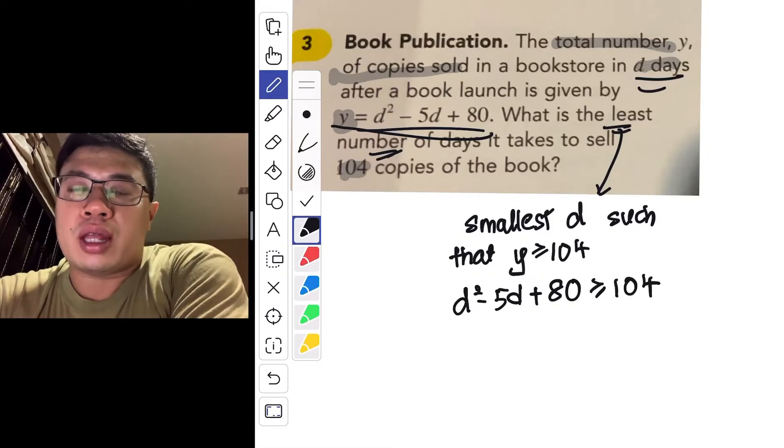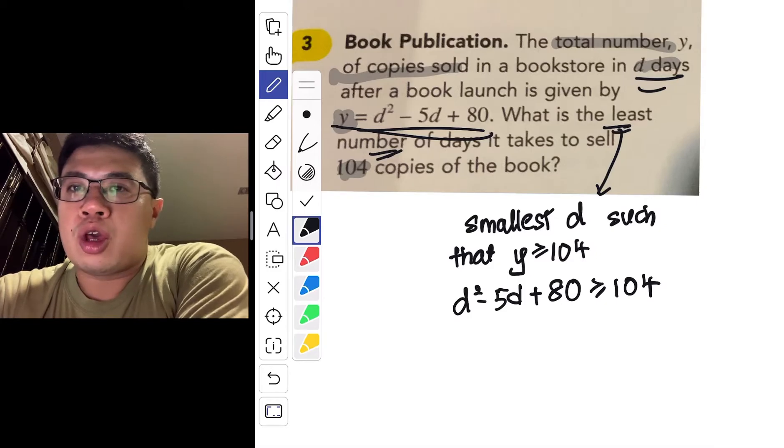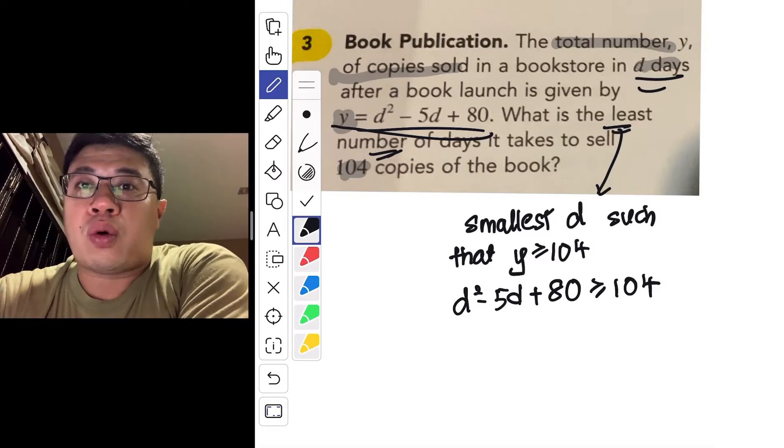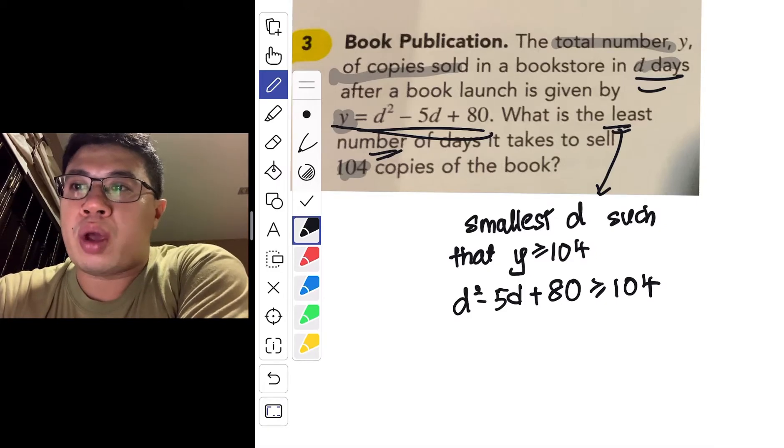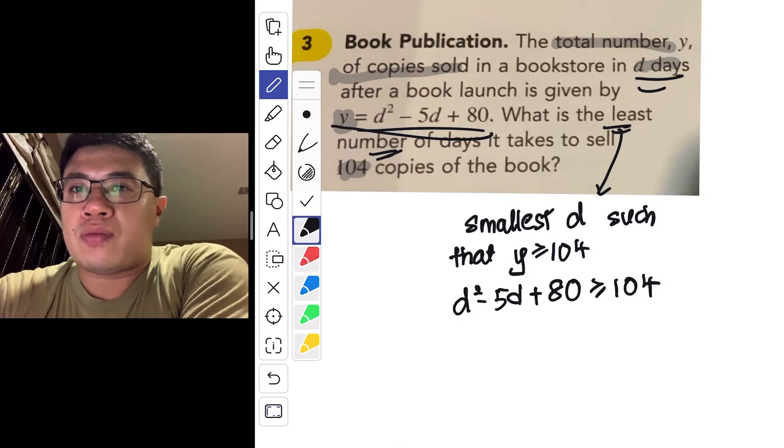So do not forget the 4 steps that I told you when solving a quadratic inequality. You make sure that the right hand side is 0. You make sure that coefficient of the quadratic power, the power 2, d squared in this case is positive. You find the x-intercepts before you sketch the curve.